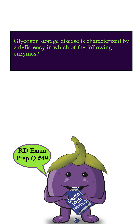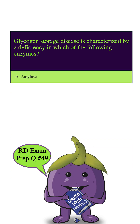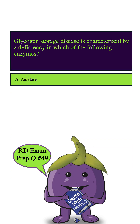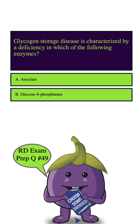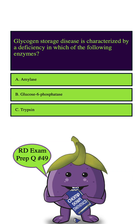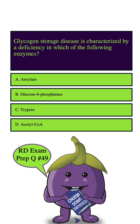Glycogen storage disease is characterized by a deficiency in which of the following enzymes? A. amylase, B. glucose 6-phosphatase, C. trypsin, D. acetyl-CoA.